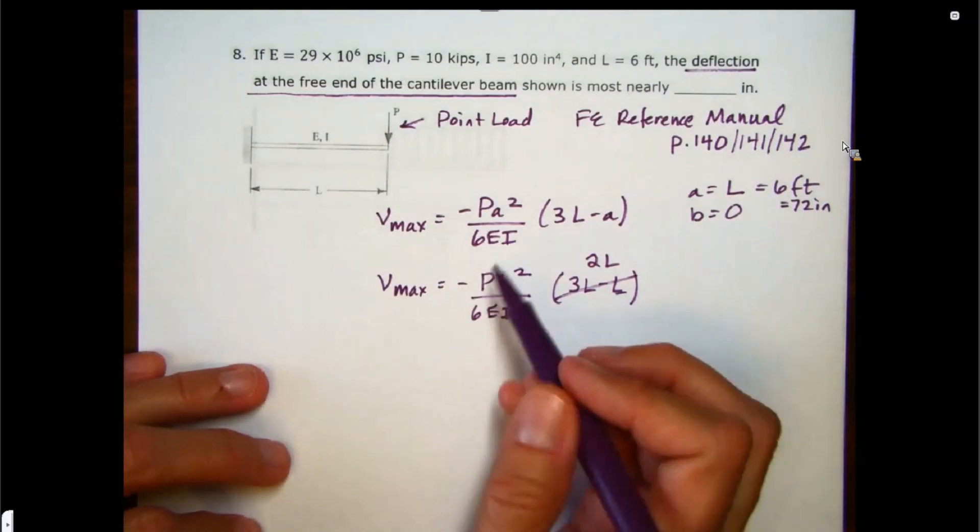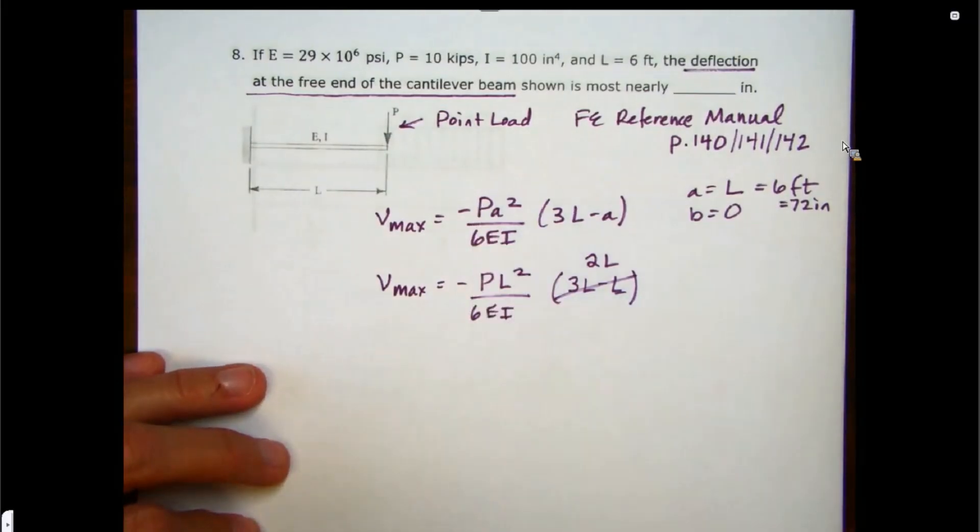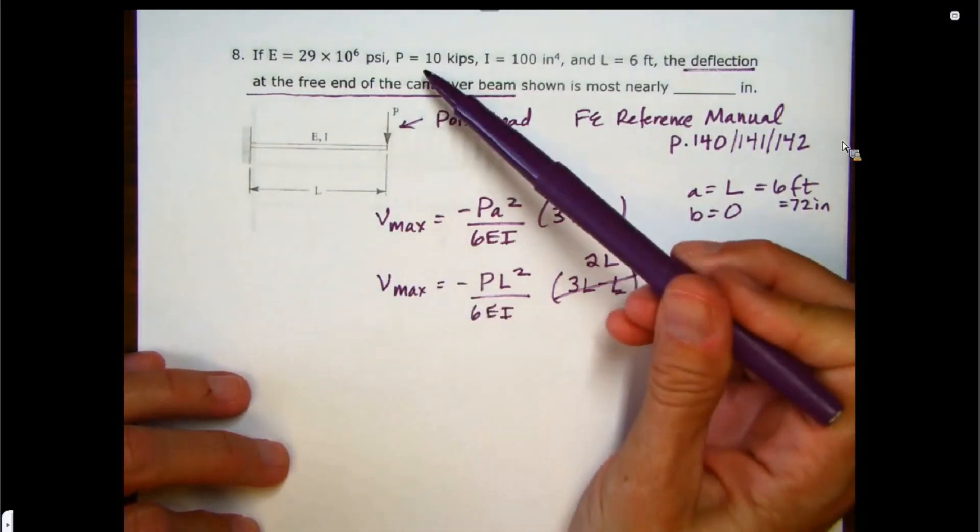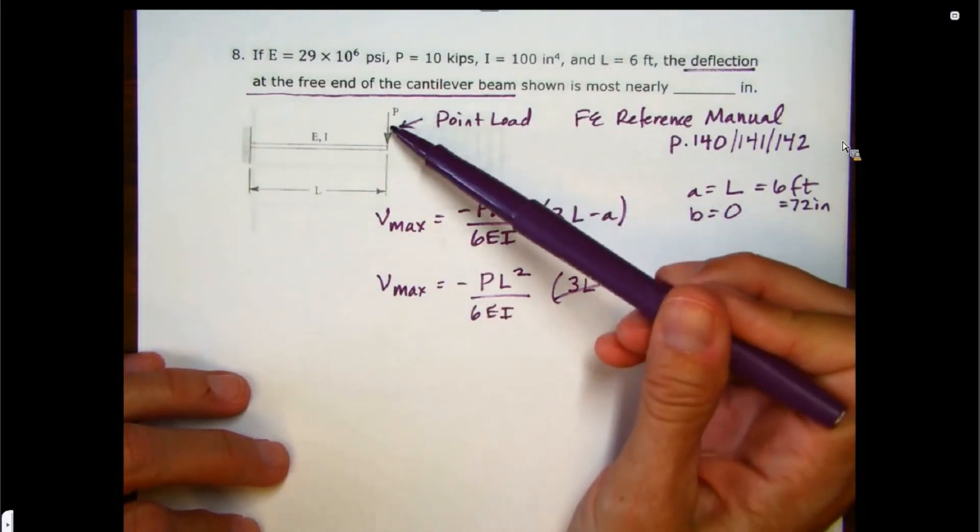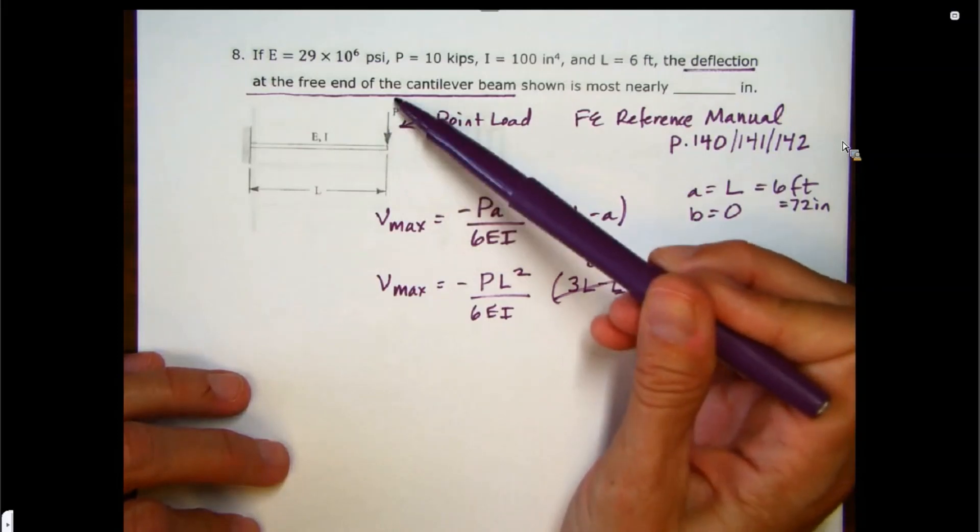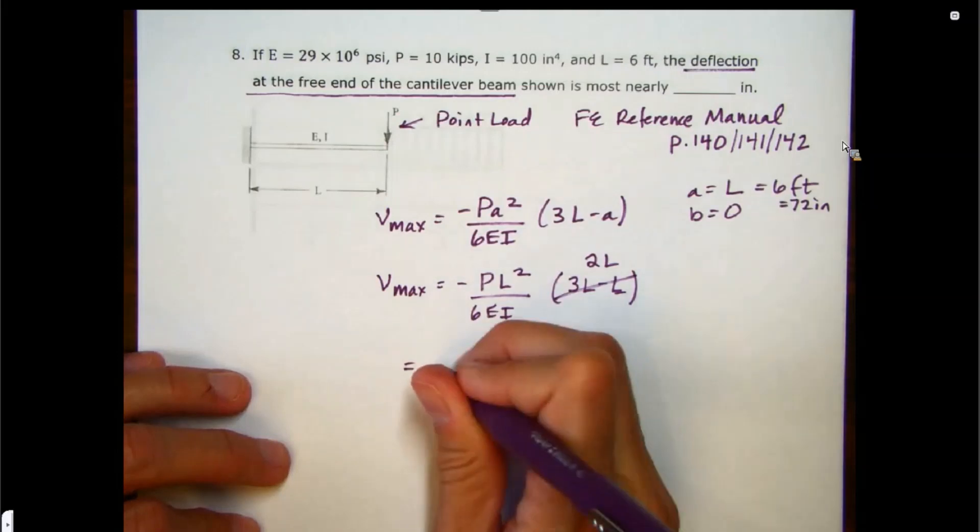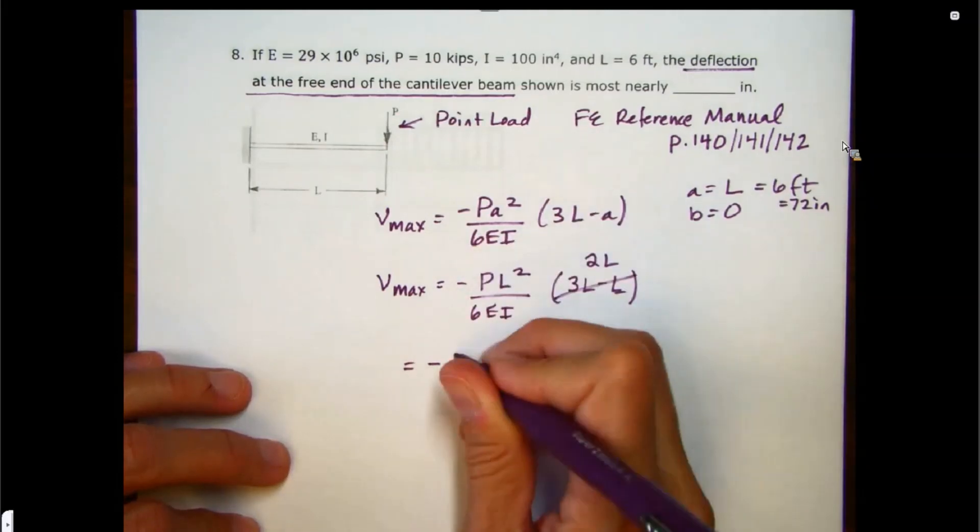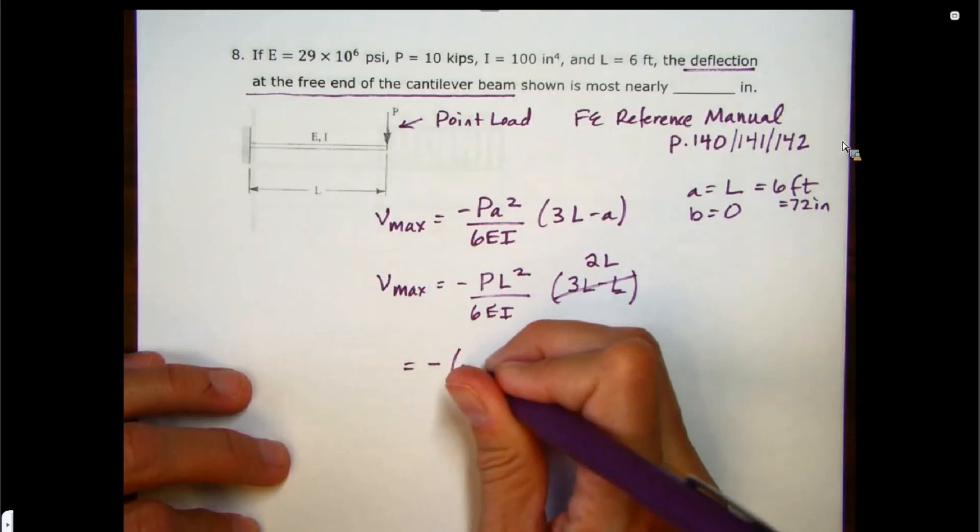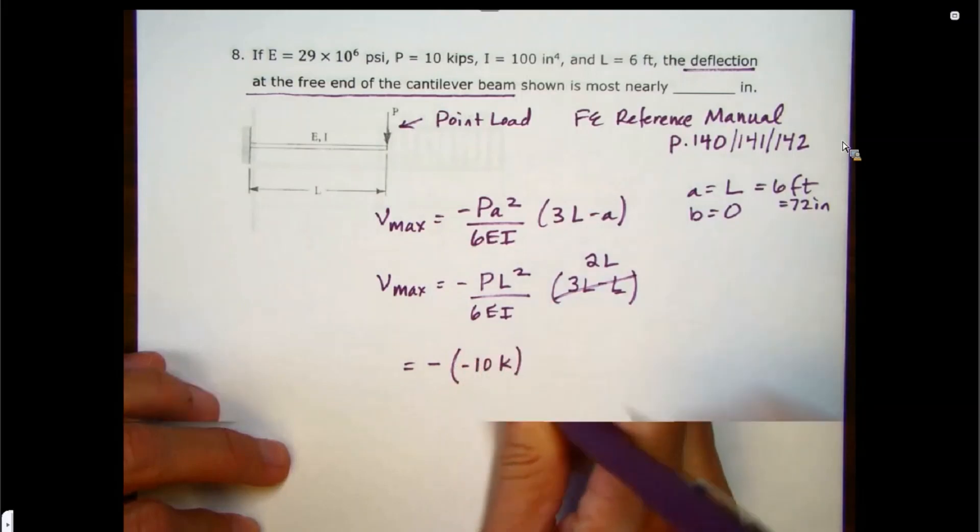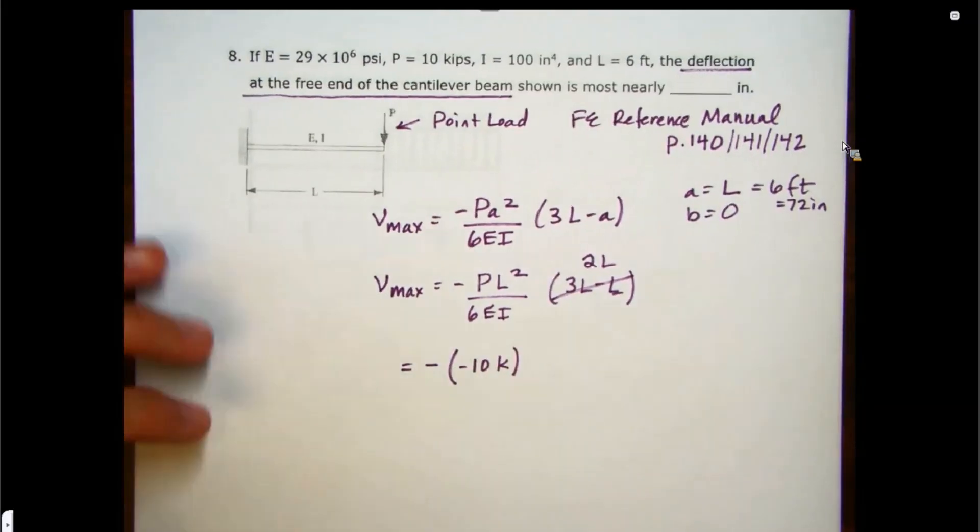So for our P here, we've got 10 kips. But remember that even though we're told P equals 10 kips, we have to look at our point load here. It is in this downward direction. So when we put this into our equation, we have a minus sign as part of our equation, but our P is a minus 10 kips. So important thing to remember.